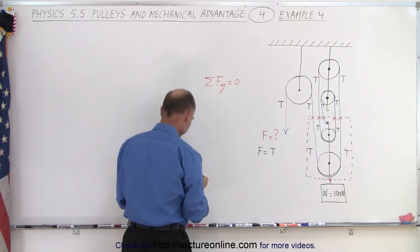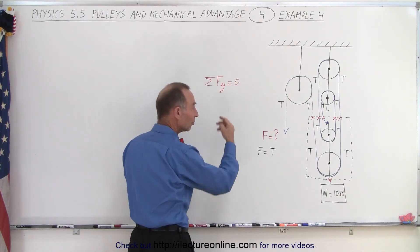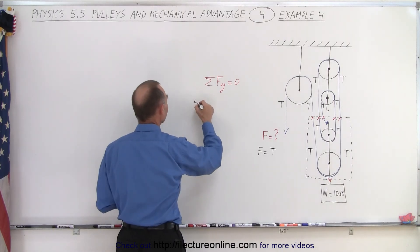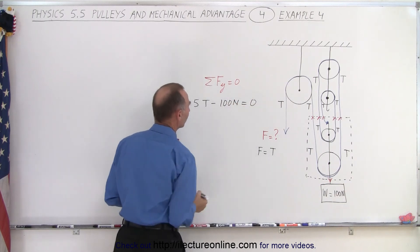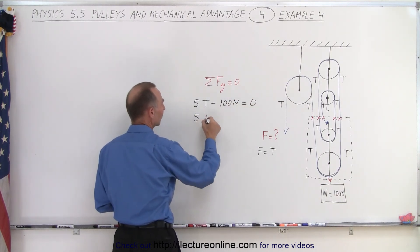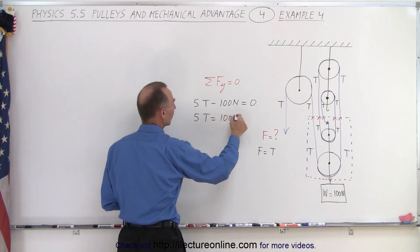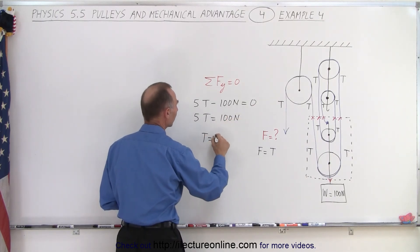And so that means we have five times the tension pulling up, so 5T in the positive direction minus 100 newtons in the negative direction must add up to zero. Which means that 5T must equal 100 newtons. That means T is equal to 20 newtons.